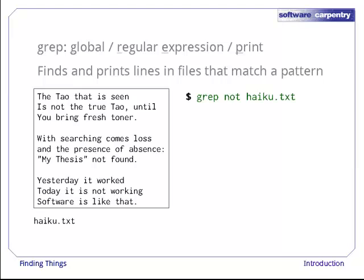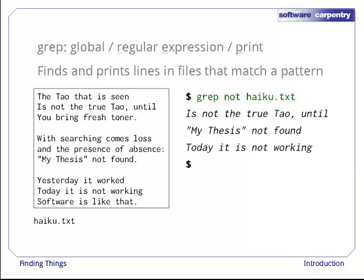Let's run the command grep NOT haiku.txt. Here, NOT is the pattern we're searching for. It's a pretty simple pattern. Every alphanumeric character matches against itself. After the pattern comes the name or names of the files we're searching in. As you can see, the output is the three lines in the file that contain the letters NOT.